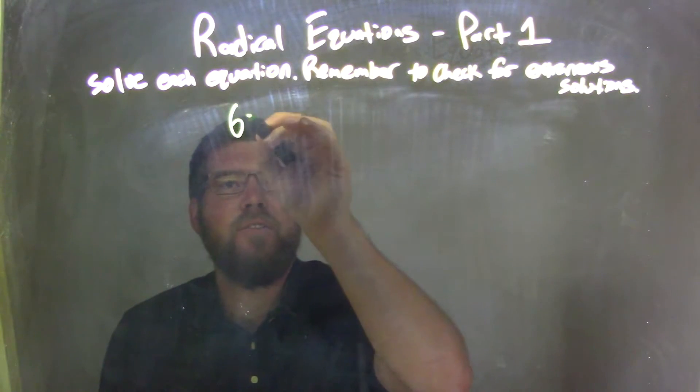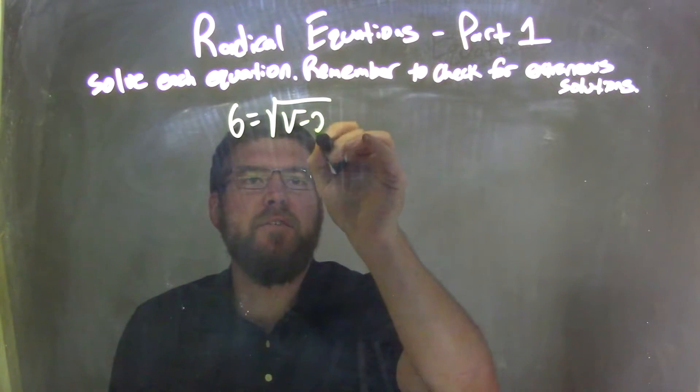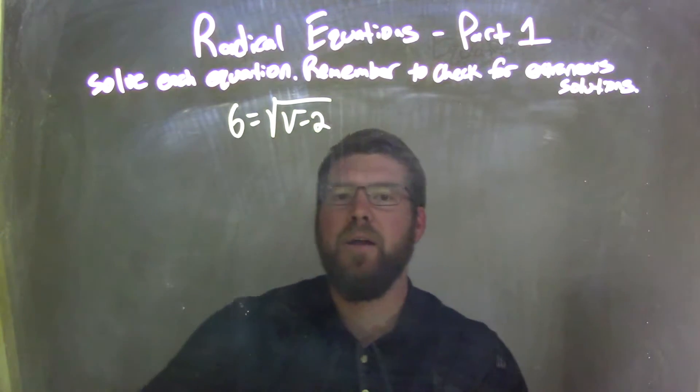If I was given this equation, 6 equals the square root of v minus 2. So 6 equals the square root of v minus 2.